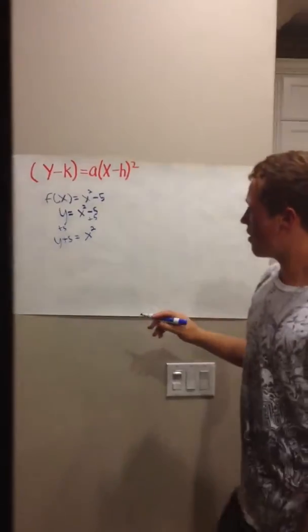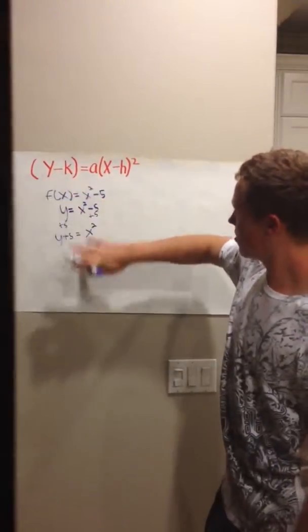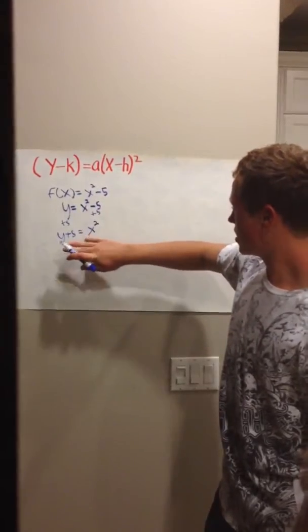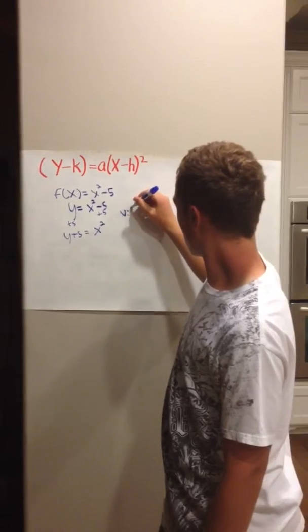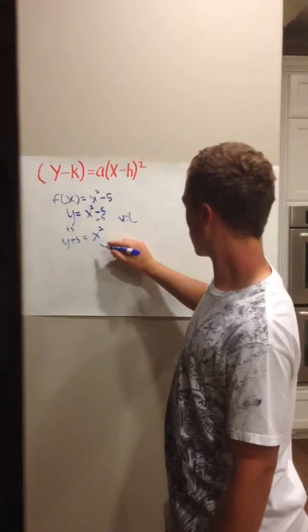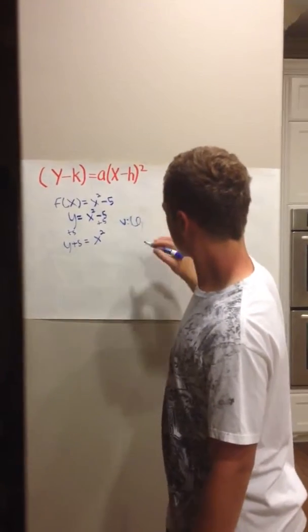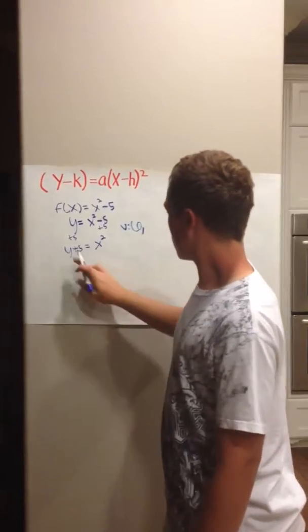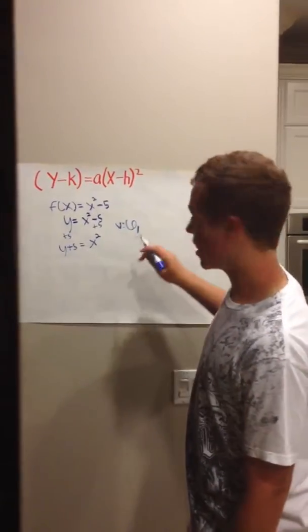Now that you have your formula, basically your formula form, you can find the vertex, which will be 0 since there is nothing on your x squared side. And since your y side is positive 5, it's going to be a negative.